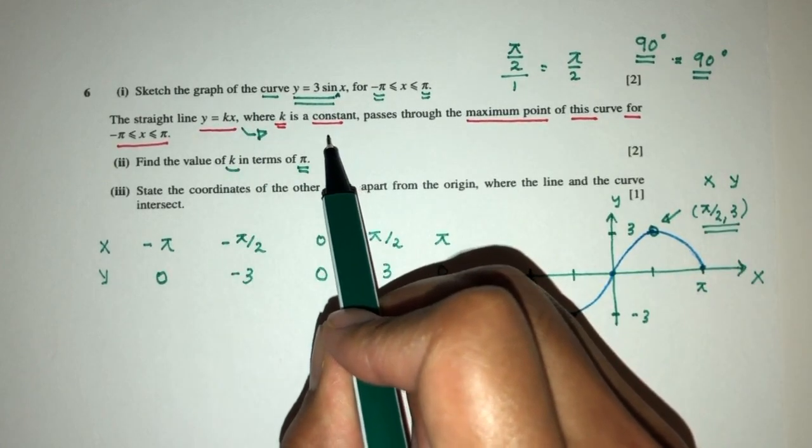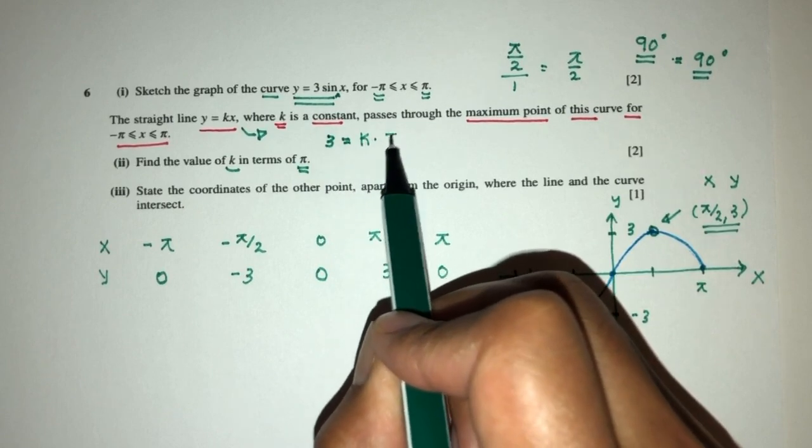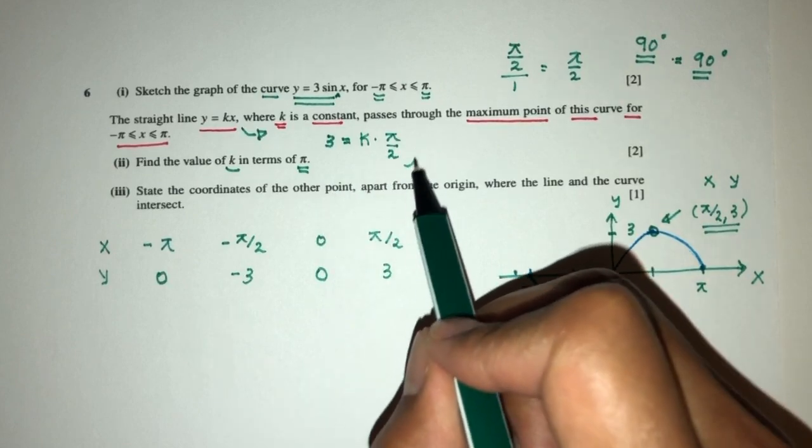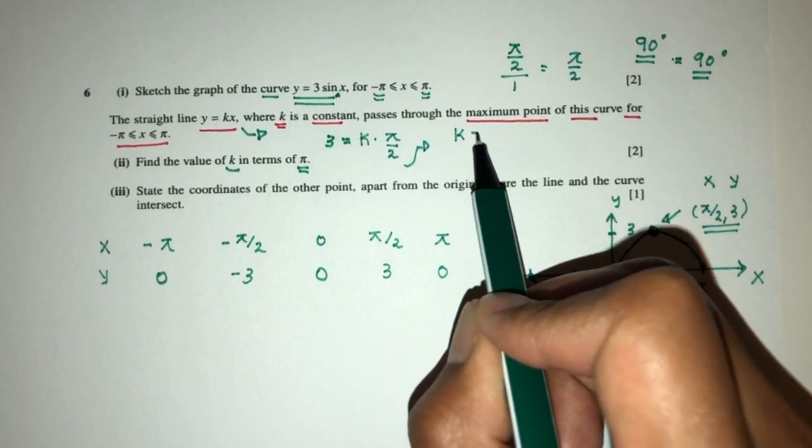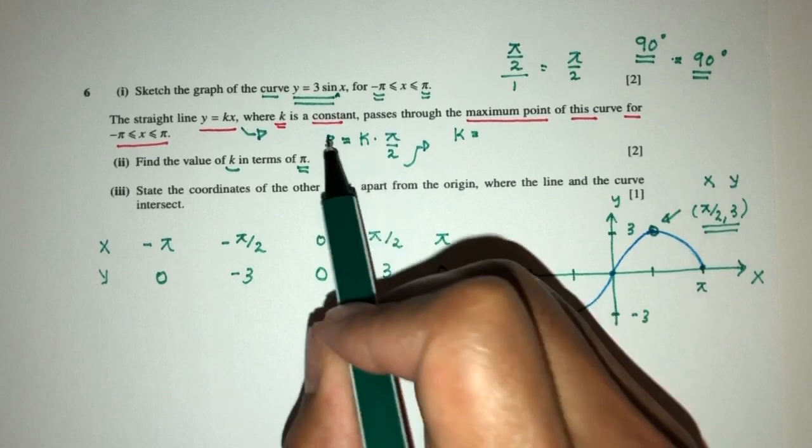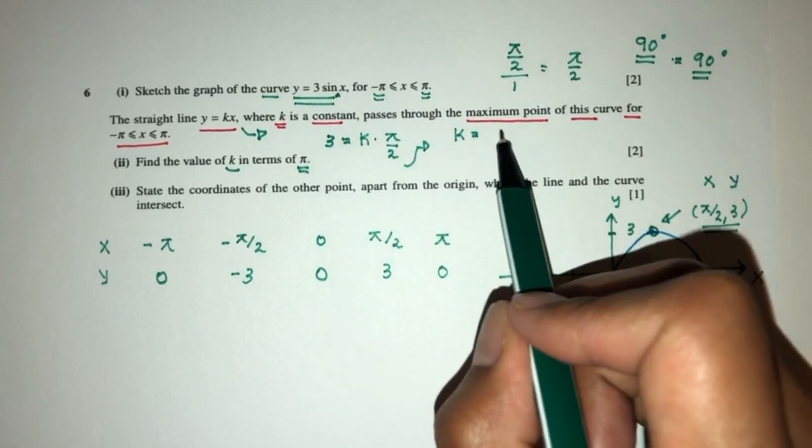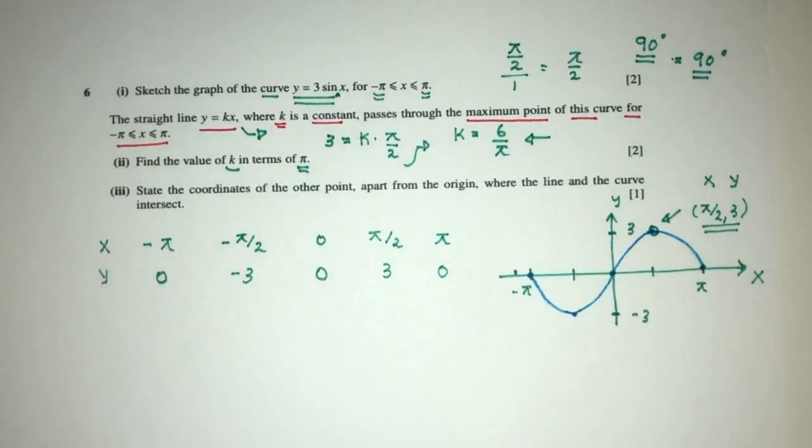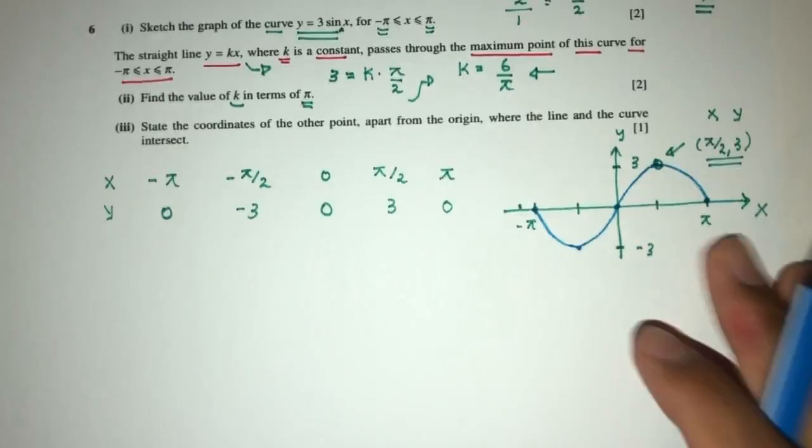Replace back in the equation. y, when y equal to 3, the value of x was given to you by pi over 2. So which means from here, k have to be, we have to cross multiply. That will be 6 over pi. This is the value of k.